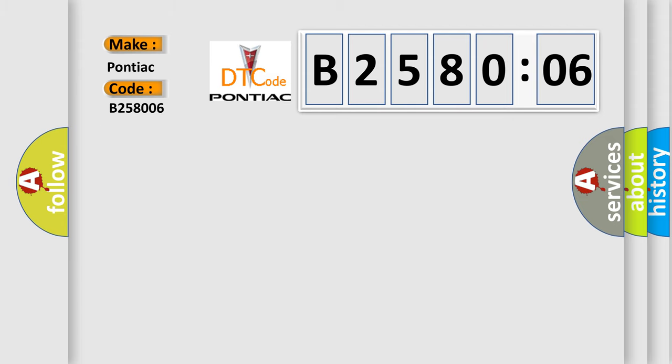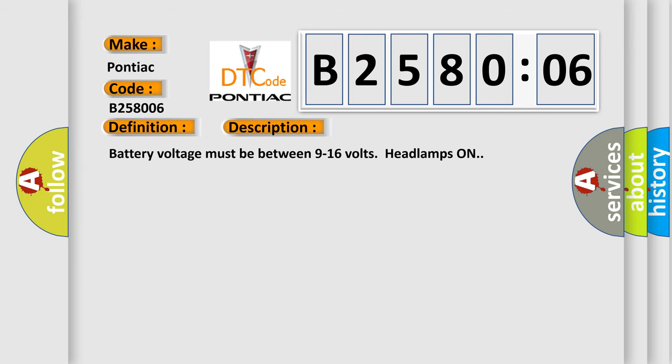The basic definition is headlamp high beam control circuit short to ground or open. And now this is a short description of this DTC code. Battery voltage must be between 9 to 16 volts with headlamps on.